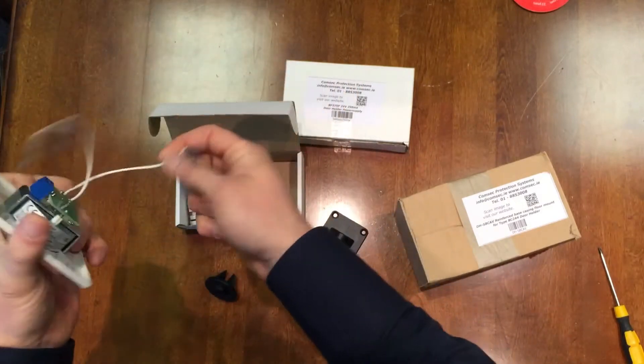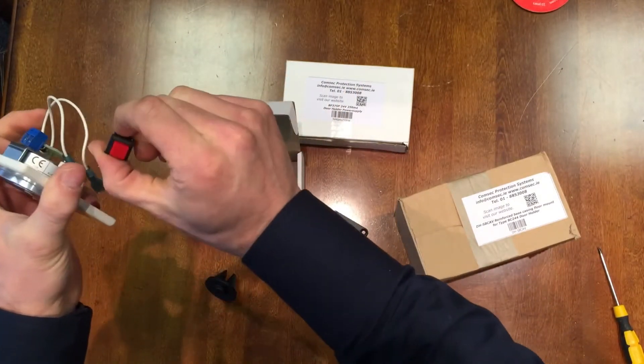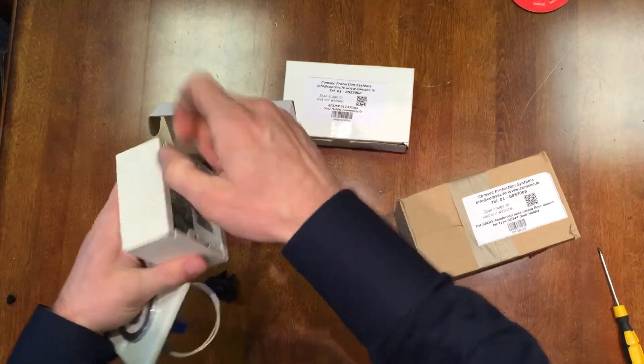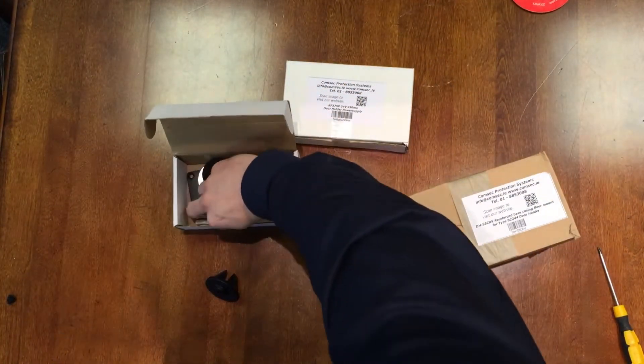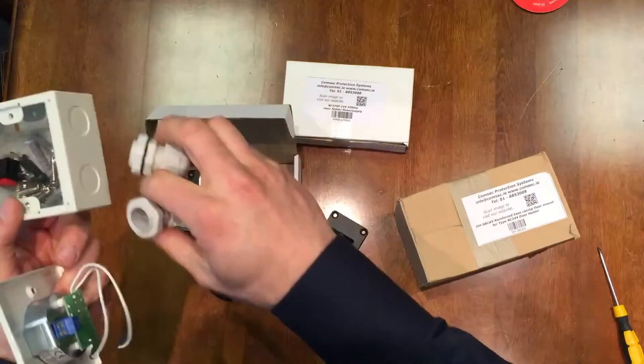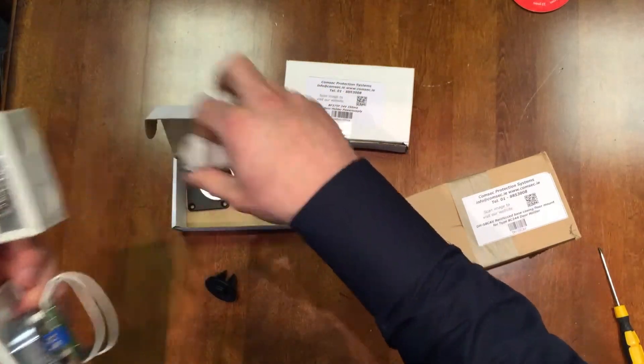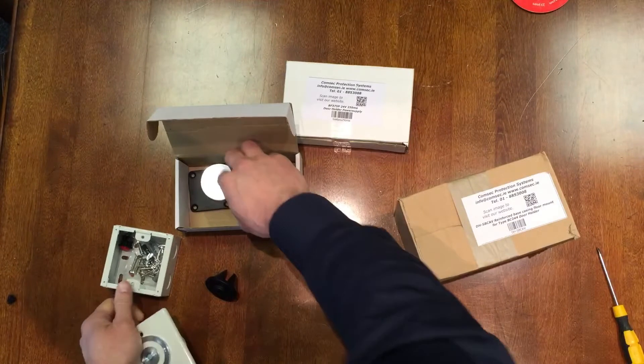This clips onto your press release button and goes into your back box if you need it. Inside the box you have glands for terminating your cable in and out, and the retaining plate.